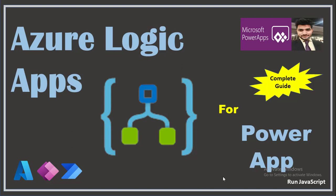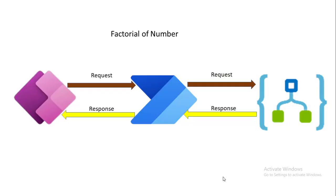In this video I'll implement one use case — finding the factorial of a number. Since we know that in Power App or Power Automate it's a little hard to implement JavaScript, but in Azure Logic App we can write JavaScript code. So what we do is: take the input from the Power App, pass it to Power Automate, Power Automate calls the Azure Logic App, the Logic App runs JavaScript to find the factorial, then sends the response back to Power Automate, which sends it back to Power App.